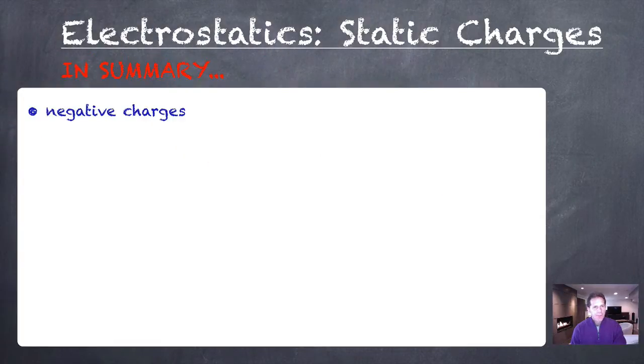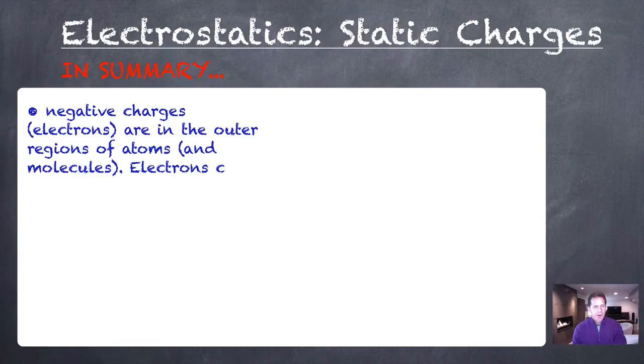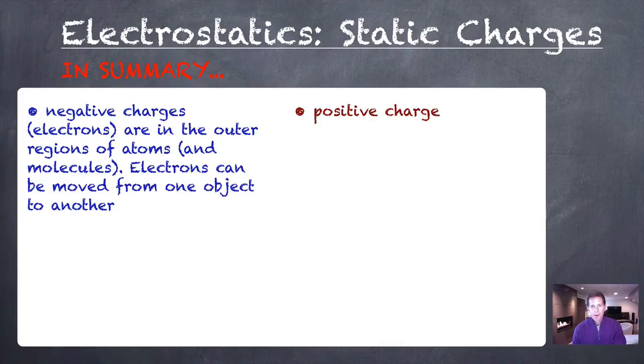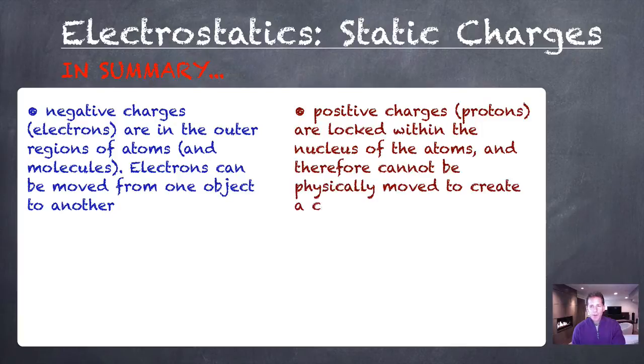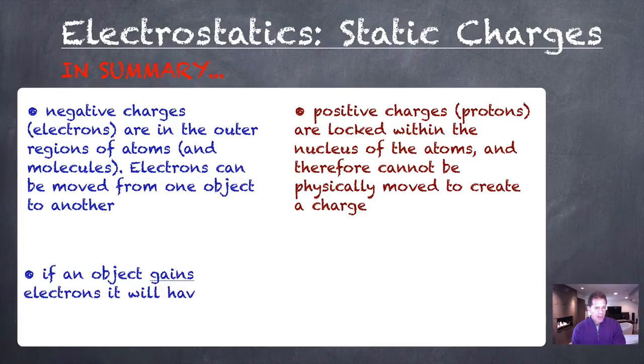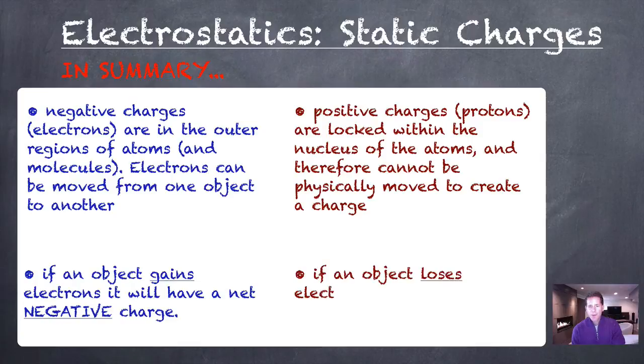So if we arbitrarily assigned a value of five or negative five to the vinyl, we'd have to have a positive charge of five for the wool, because altogether these things were electrically neutral to begin with before they were rubbed back and forth. So in summary then, negative charges, the electrons, are in the outer regions of the atoms and the molecules. Electrons can be moved from one object to another, and they will be the only ones accessed in some direct physical way. Positive charges, the protons, are locked within the nucleus of the atoms and therefore cannot be physically moved to create a charge. So if an object gains electrons, it will have a net negative charge, and if an object loses electrons, it will have a net positive charge.